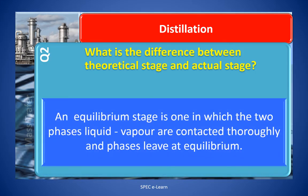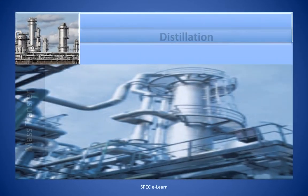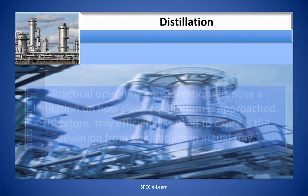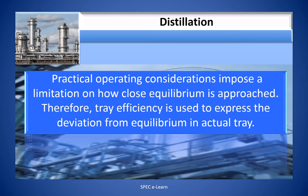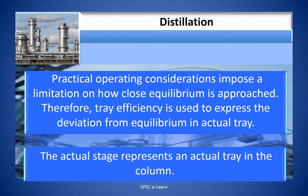An equilibrium stage is one in which the two phases — liquid and vapor — are contacted thoroughly and the phases leave at equilibrium. Practical operating considerations impose a limitation on how close equilibrium is approached. Therefore, tray efficiency is used to express the deviation from equilibrium in an actual tray. The actual stage represents an actual tray in the column.